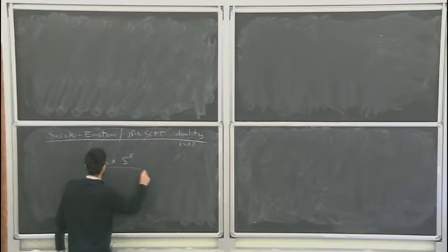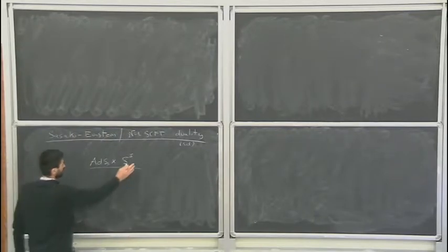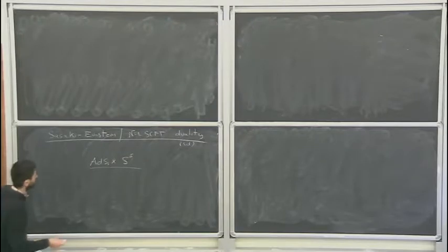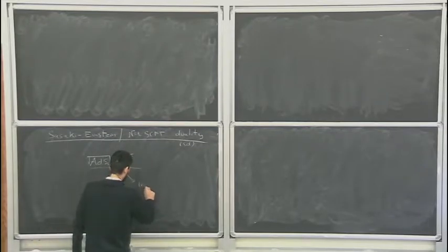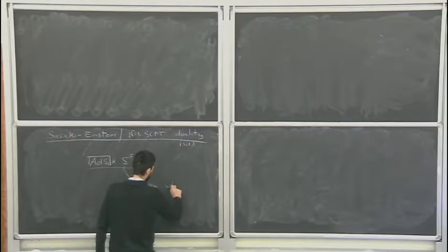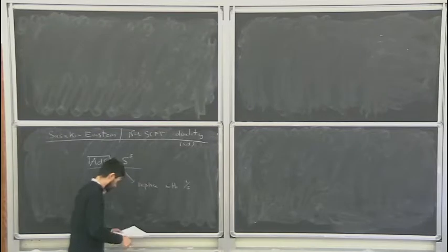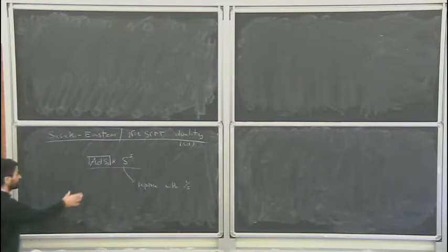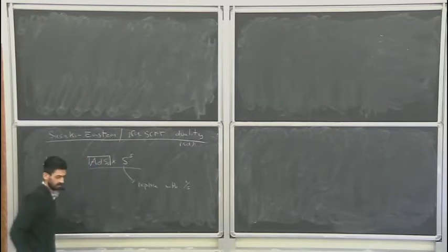Our favorite example is ADS-5 cross S-5. One can deform this solution and the corresponding duality in various ways. Yesterday we focused on keeping S-5 and deforming ADS-5 by adding finite temperature and some finite chemical potential. Today we will fix ADS-5 completely and replace S-5 with another compact manifold, which I will call Y-5 in general. I will insist on having ADS-5 and one quarter supersymmetry, which corresponds to N equal one in the field theory dual.